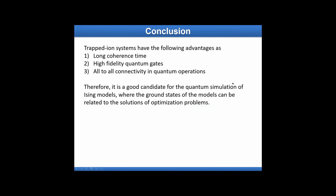In conclusion, I introduced the trapped ion system, which has really long coherence time — the longest among all possible quantum systems — and although fidelity is limited, it shows the highest physical fidelity among all physical platforms. We can connect all qubits to all others as we wish. I believe this is a really good system for the Ising model ground state problem connecting to optimization problems.